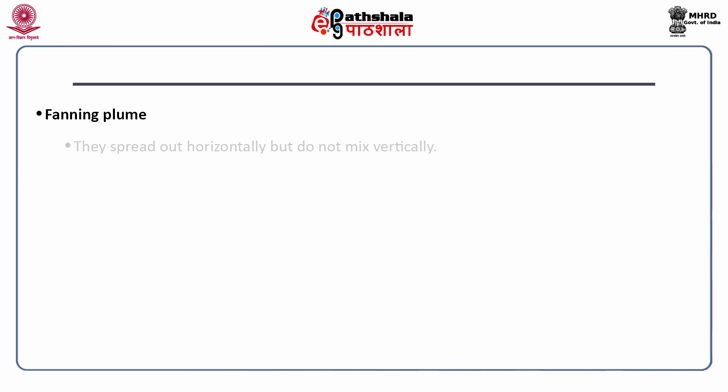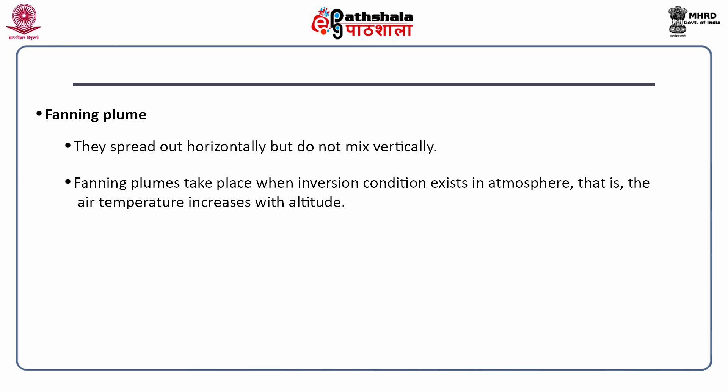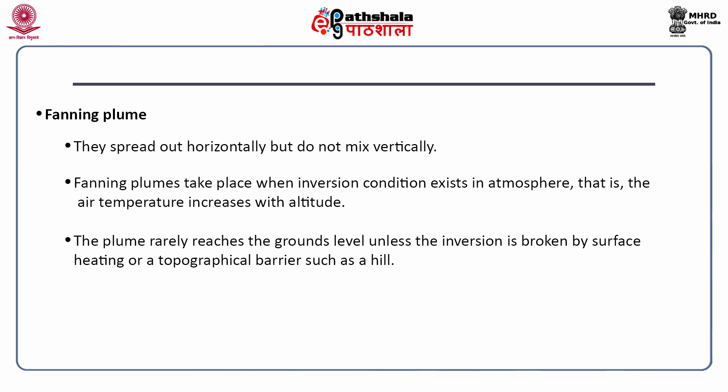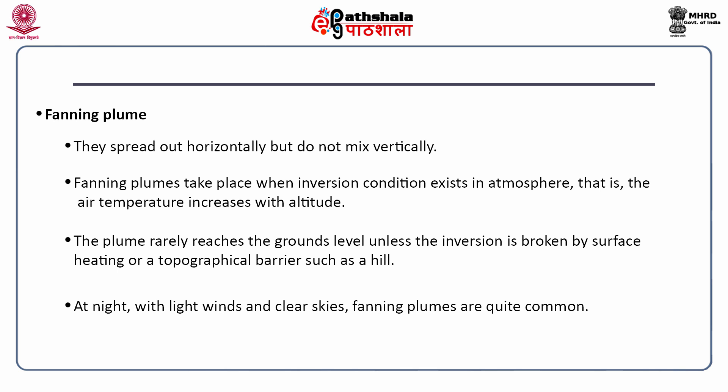The fourth one is fanning plume. It spreads out horizontally but does not mix vertically. Fanning plumes take place when inversion conditions exist in the atmosphere, that is, the air temperature increases with altitude. The plume rarely reaches the ground level unless the inversion is broken by surface heating or topographical barriers such as a hill. At night with light winds and clear skies, fanning plumes are quite common.